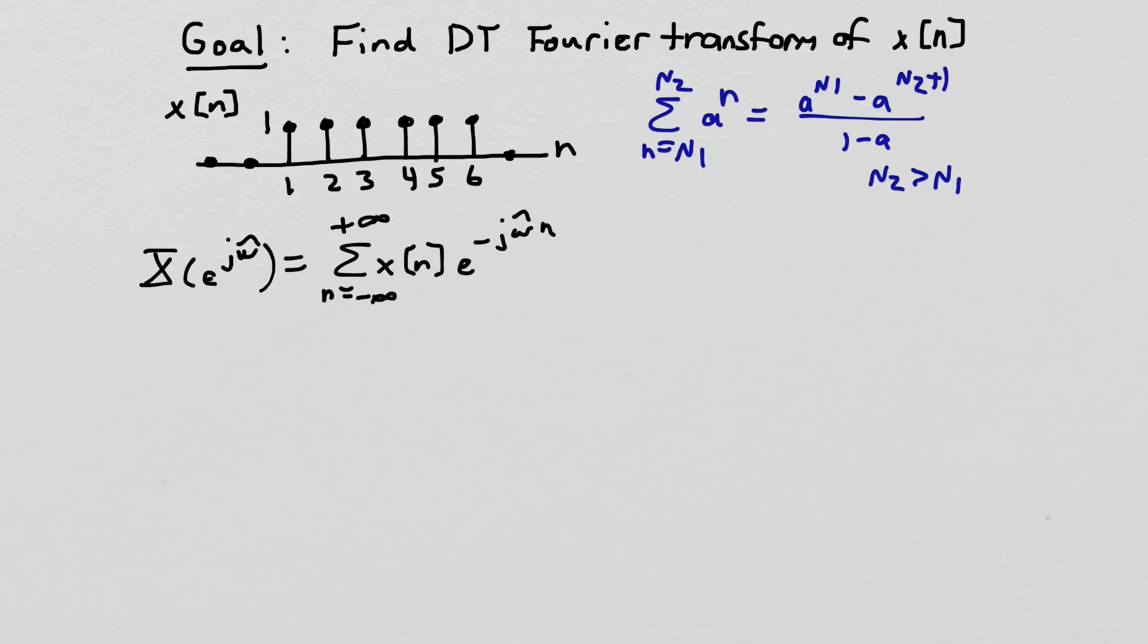So now we'll make it specific to this problem, and we notice, well, it only has to be a finite summation because this is only non-zero over this range. So we can rewrite this as the sum n equal 1 to 6, and over that range x(n) is just 1. So we're summing x(n), which is 1, e^(-jω̂n).